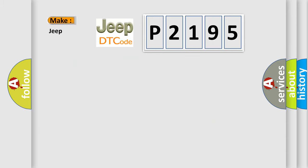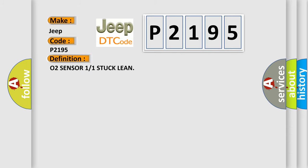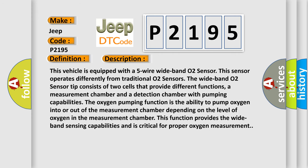What does the diagnostic trouble code P2195 interpret specifically for Jeep car manufacturers? The basic definition is O2 sensor 1/1 stuck lean. This vehicle is equipped with a five-wire wideband O2 sensor, which operates differently from traditional O2 sensors. The wideband O2 sensor tip consists of two cells that provide different functions: a measurement chamber and a detection chamber with pumping capabilities. The oxygen pumping function is the ability to pump oxygen into or out of the measurement chamber, depending on the level of oxygen present, providing wideband sensing capabilities critical for proper oxygen measurement.